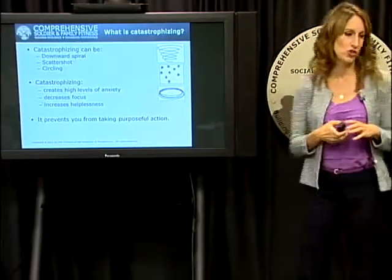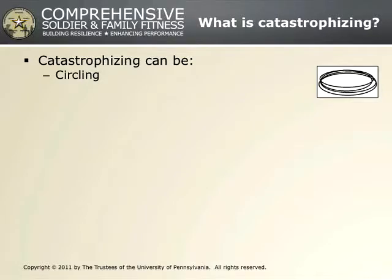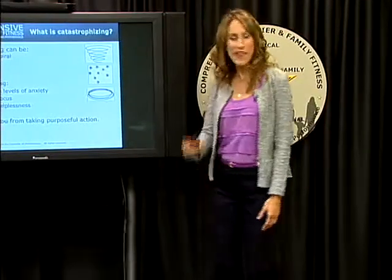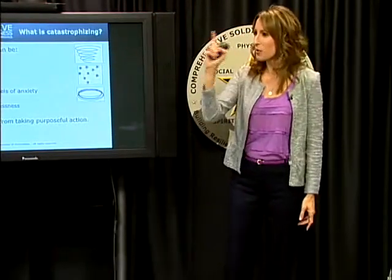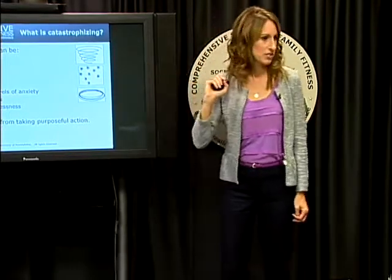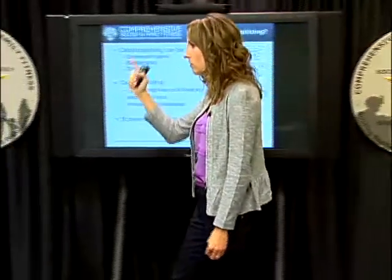The third one we call 'circling,' which is very different than the first two. Let's say you have a brief to deliver. In the circling form of catastrophizing, your brain is going something like: 'There's no way I'm going to pull off this brief. I'm not going to be able to speak clearly. There's no way I'm going to pull off this brief. I'm just not going to be able to speak clearly.' You're going around and around with the same one or two thoughts — just like a cat chasing its tail.